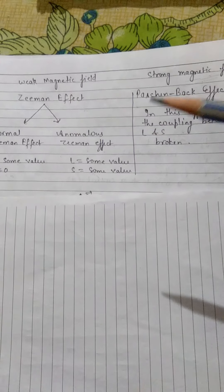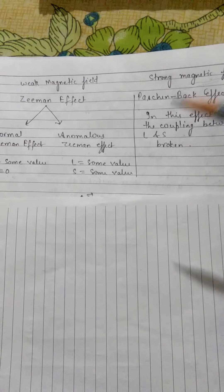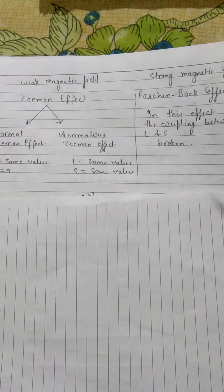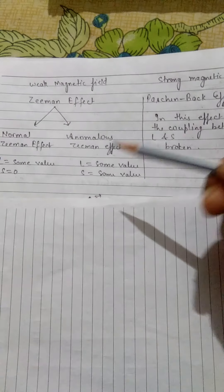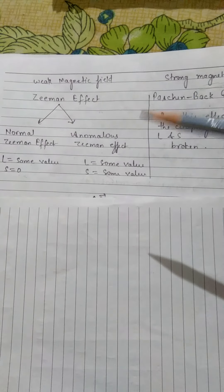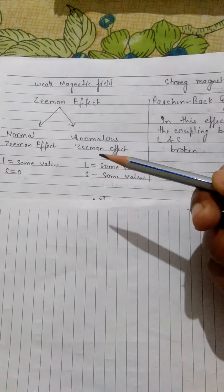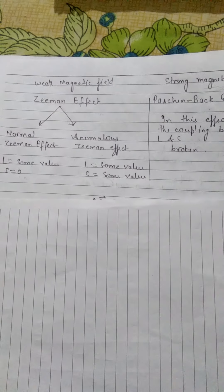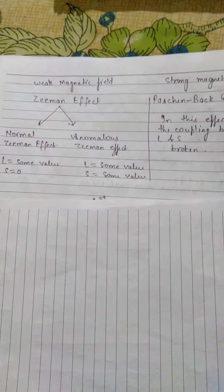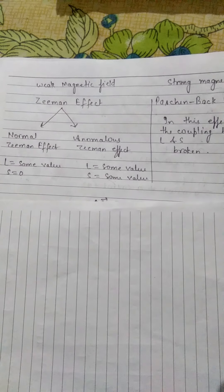The magnetic field strength is defined by the force due to the orbital and spin motion of the electron. As we discussed in the first chapter, the orbital motion and spin motion of the electron produce an internal force.